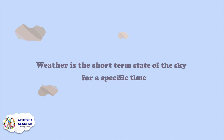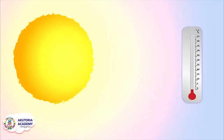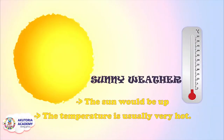Now let's learn about the six types of weather conditions. Sunny weather: when we have a sunny weather, the sun would be up and the temperature of the environment is usually very hot.